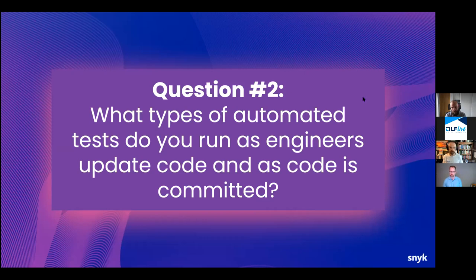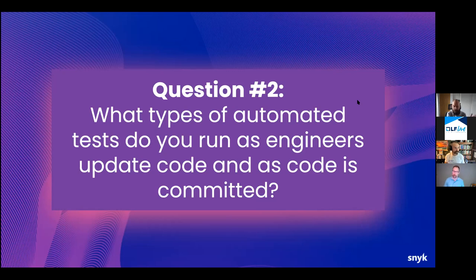You could also be doing that with security — making sure the production database is not accessible from certain subnets. Once you start building up that suite, not only do you have protection against change when you're knowingly making change, but also protection against change when somebody else is making it and maybe you don't want them to be. There's a policy question about whether to do security validation as a pre-check or post-check — ideally do both: fast feedback as a pre-check, and confidence through drift detection as well.